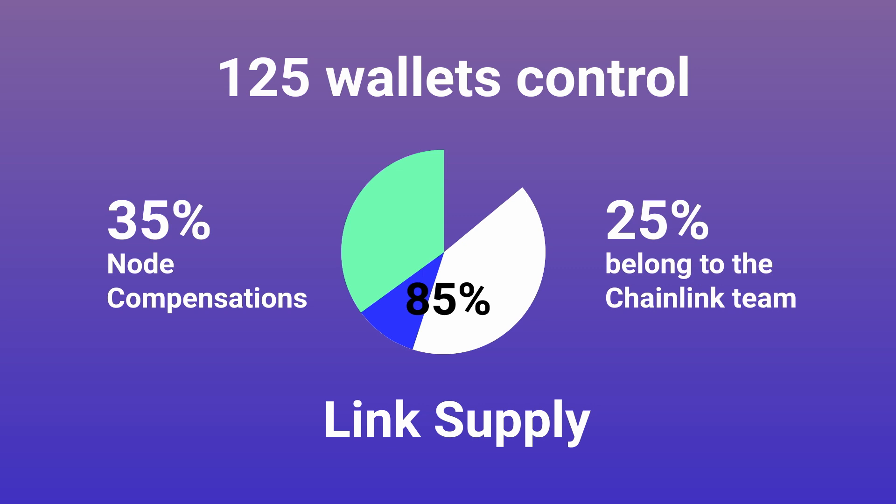A further 25% of the tokens belong to the Chainlink team and are slated to be used as funding for development, which should benefit the platform in the long run. Another factor to consider is that unlike many other projects, Chainlink's native token is not used for governance, so a concentration of funds in fewer wallets doesn't necessarily mean that the project is centralized. In fact, each individual network in the Chainlink ecosystem is free to implement its own governance scheme.